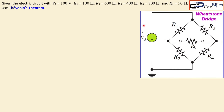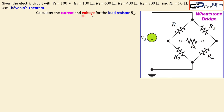Let's look at the circuit. We have this circuit, called the Wheatstone bridge, which can be used for some sensor applications. We have a DC voltage VS of 100 volts, five resistors R1, R2, R3, and R4 with their given values, and also a load resistor of 50 ohms.